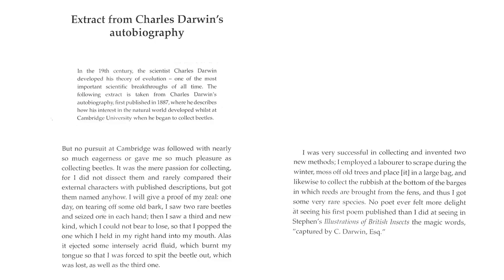This is source B. This is a pre-19th century text, so it will be quite challenging. I will read it with you and we'll identify some of those key phrases together. This bit here is the preamble at the beginning — we do not need to highlight anything from here; it is the description about the source. It is useful for question four, however, which is why they include it. This is the extract from Charles Darwin's autobiography, where he describes how his interest in the natural world developed whilst at Cambridge University when he began to collect beetles.